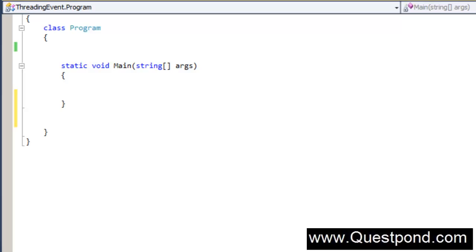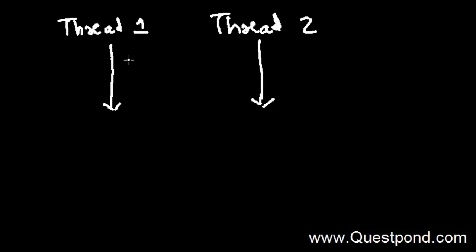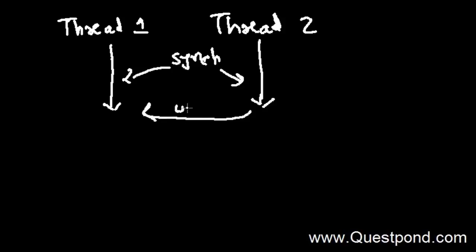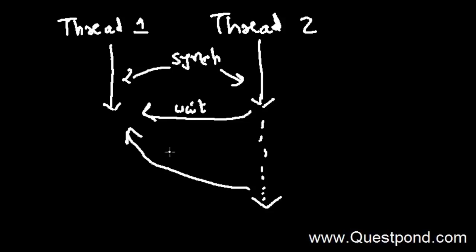Let's first try to understand what exactly this signaling methodology means. Let's consider a simple example. We have two threads, Thread1 and Thread2, and we want to implement synchronization between them. Thread2 can send a signal to Thread1 saying please go into a wait mode. Then Thread2 continues doing its work, and when Thread2 finishes, it signals Thread1 again saying you can start from the place where you halted. In this way, using the signaling methodology, we can implement synchronization between threads.